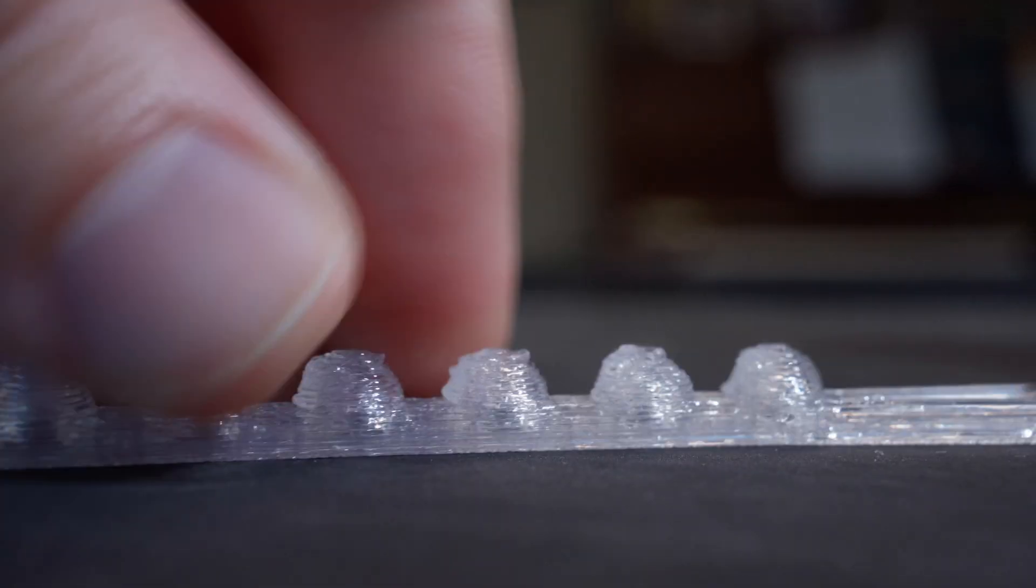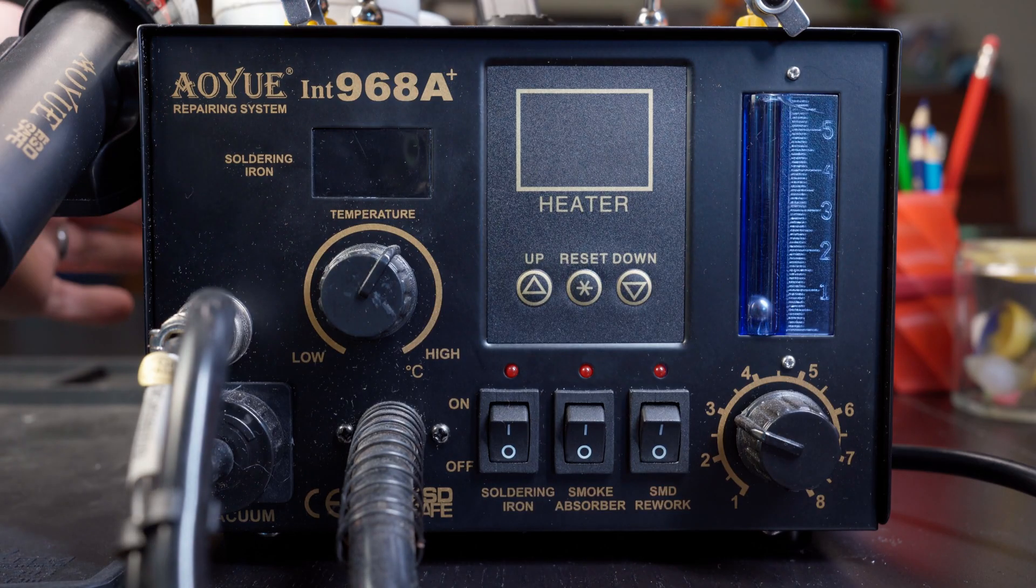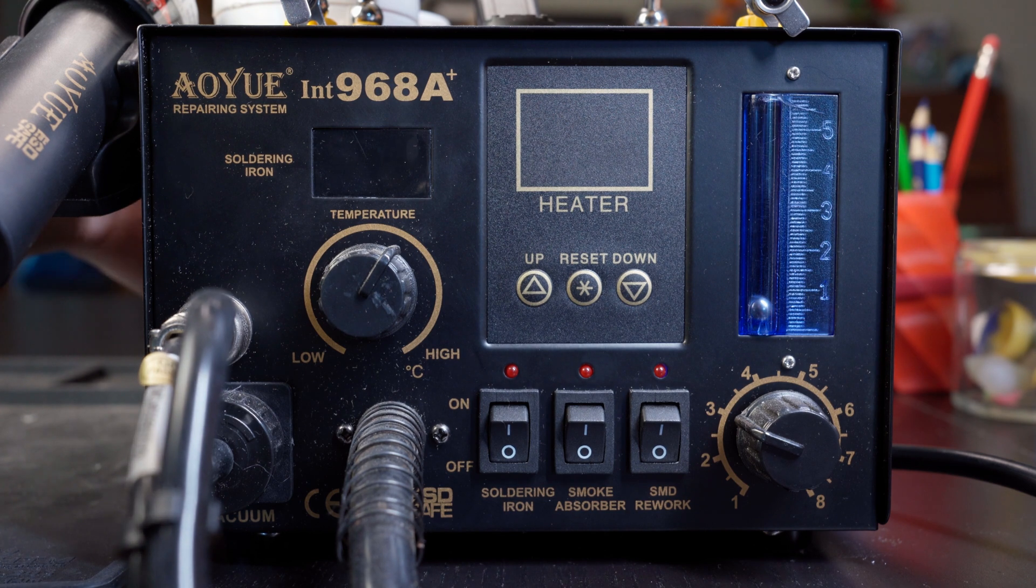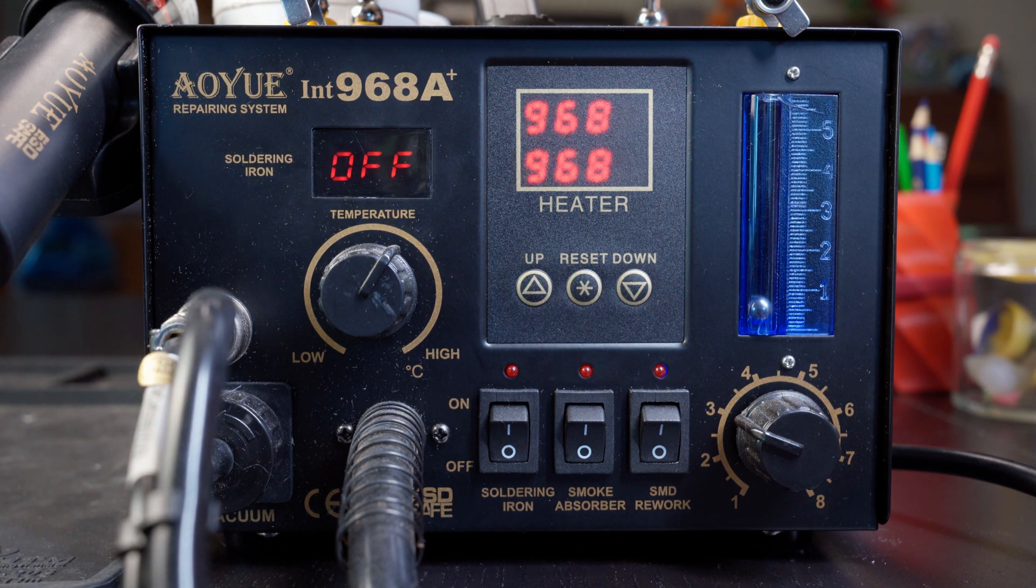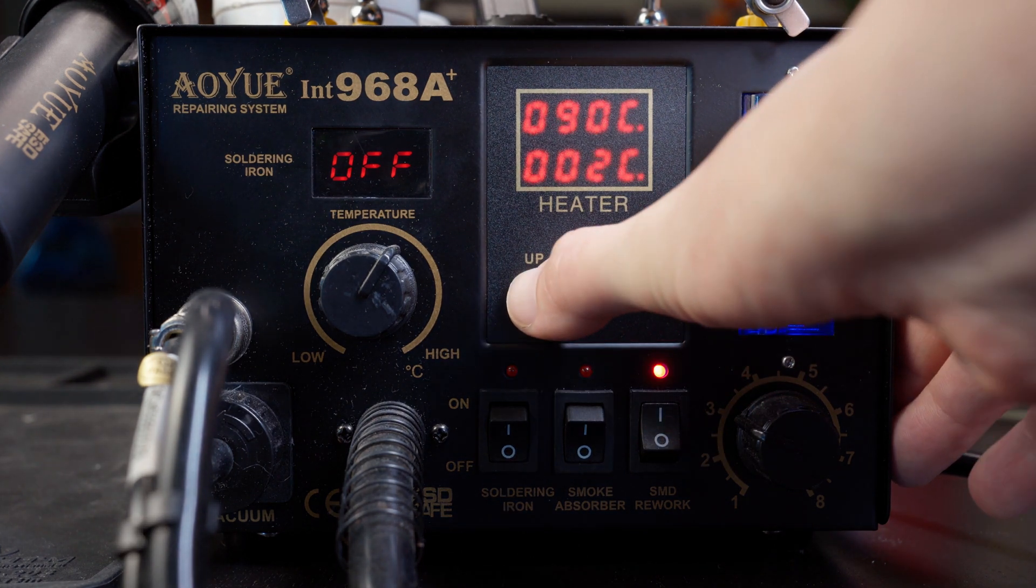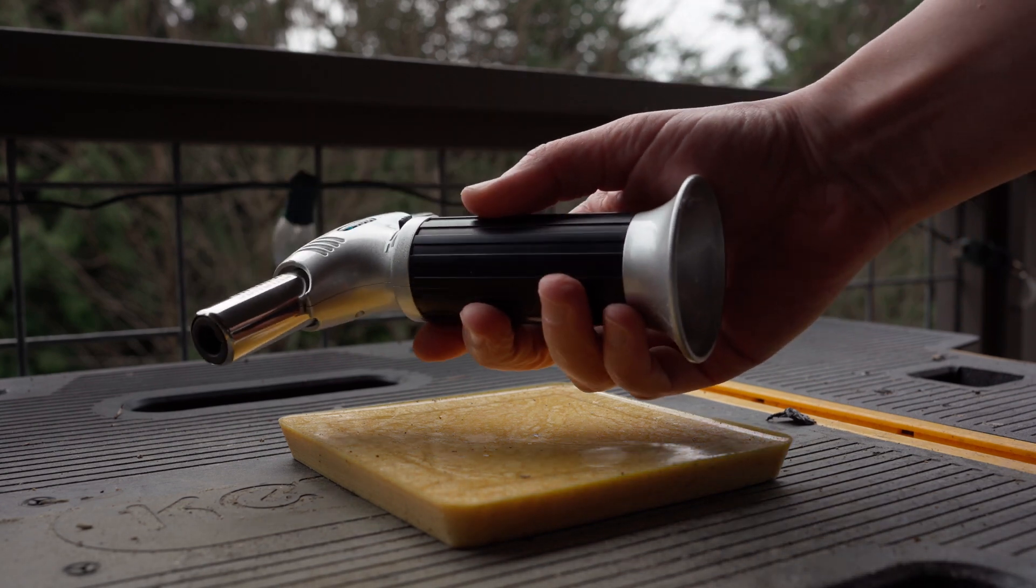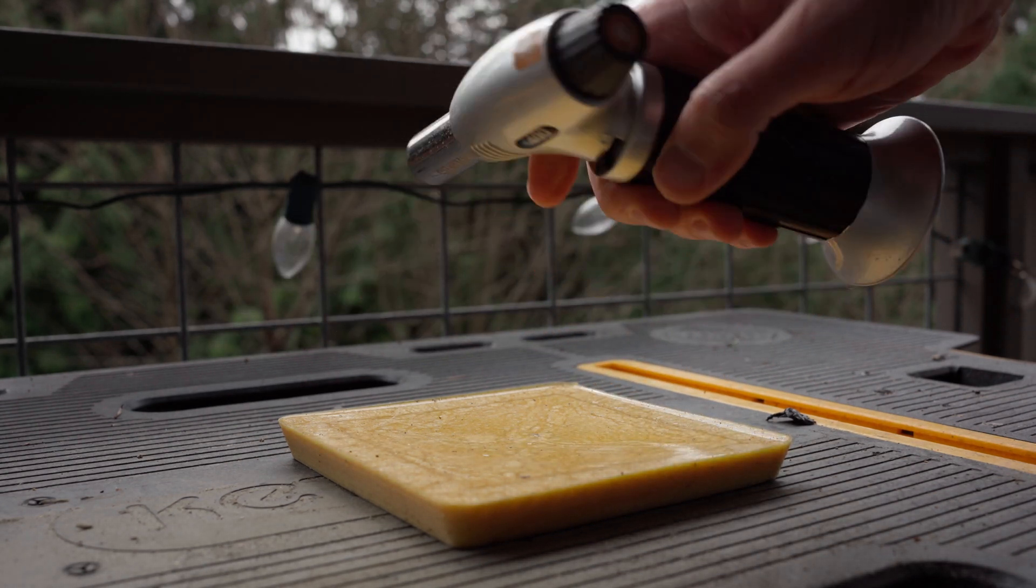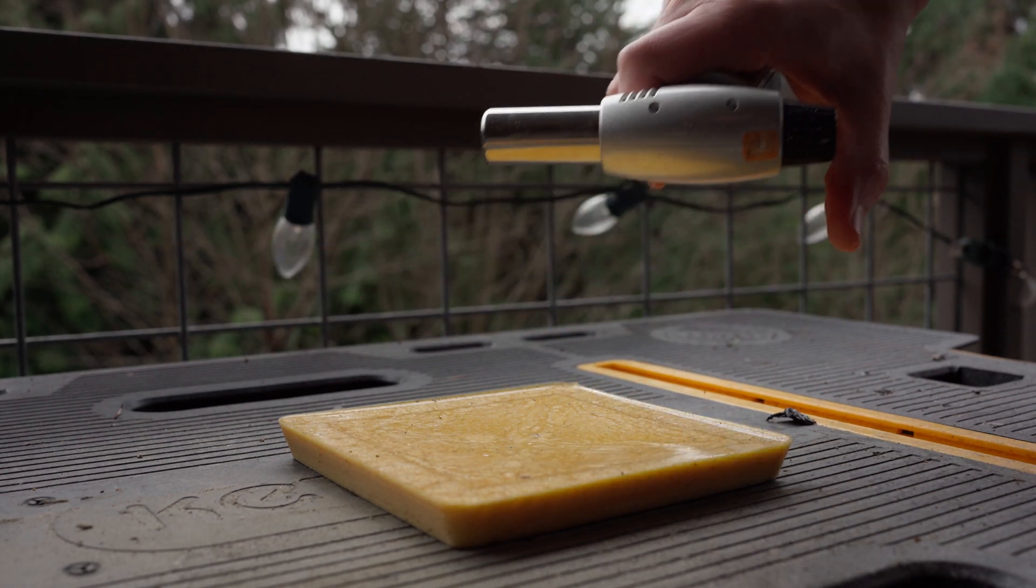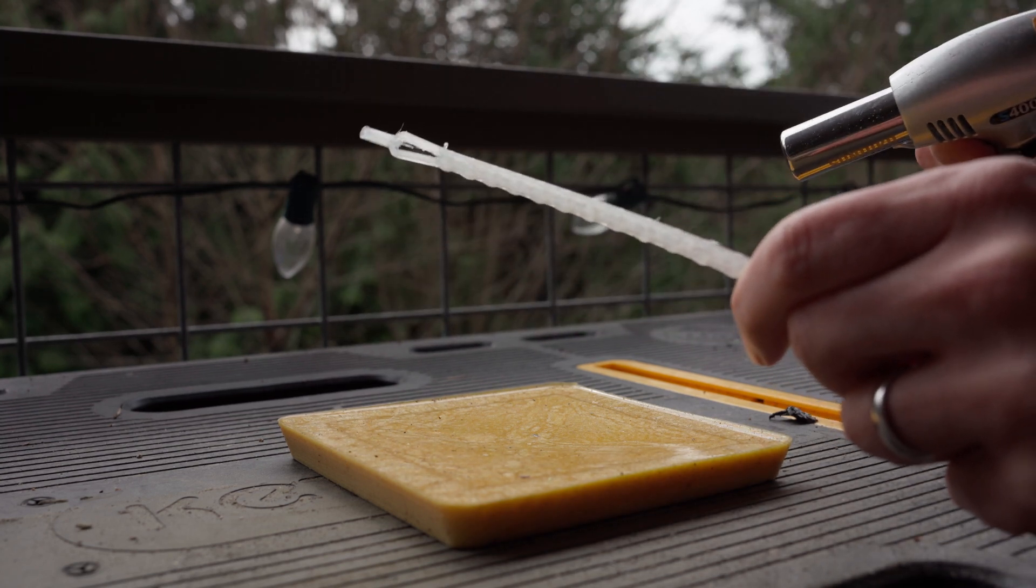We just sort of press the molten string material in so it's out of the way. For the hot air, we use our soldering station, which has a built-in hot air rework tool. A butane torch also works well. Just don't overdo it.